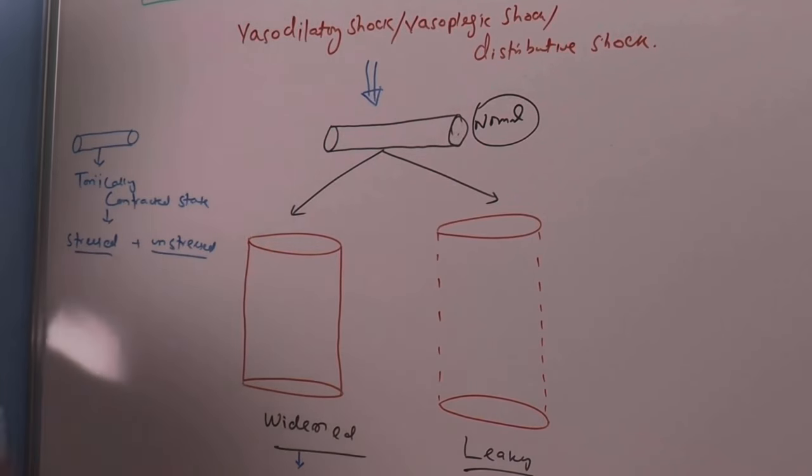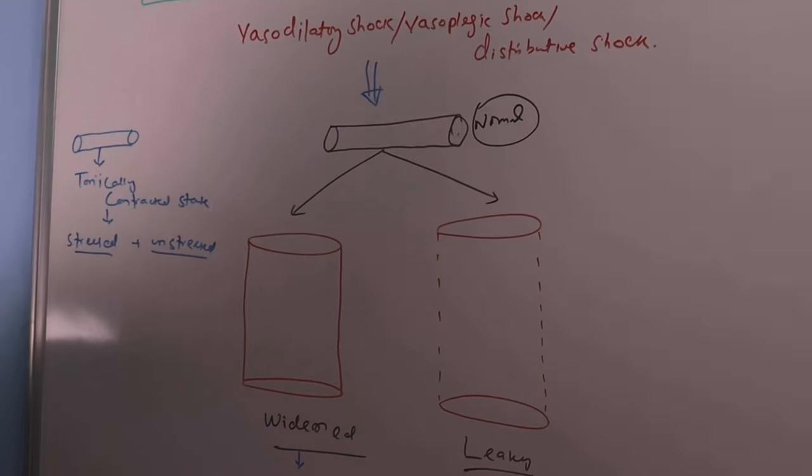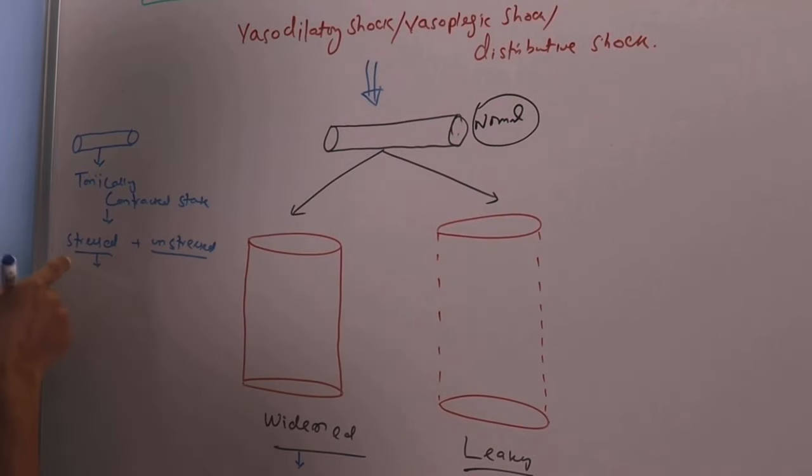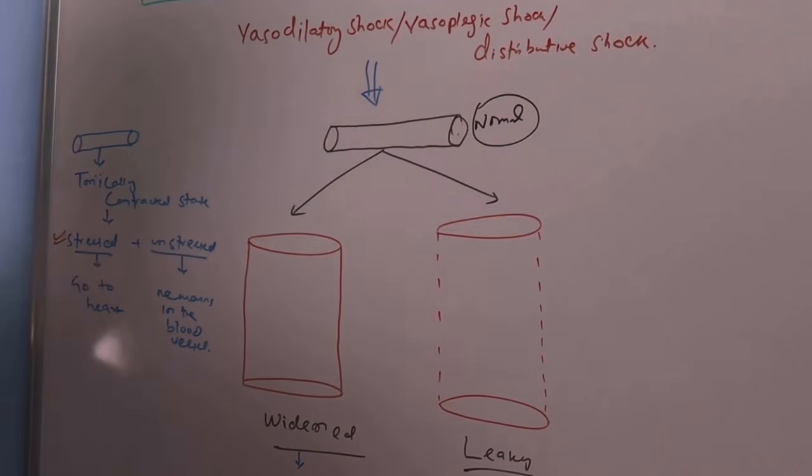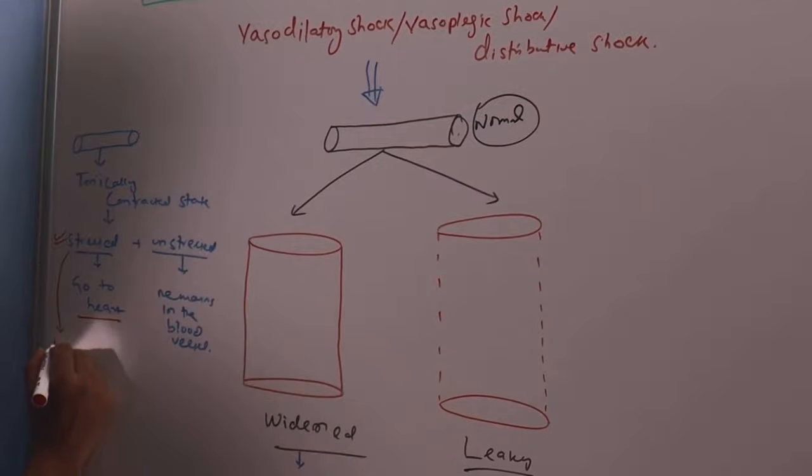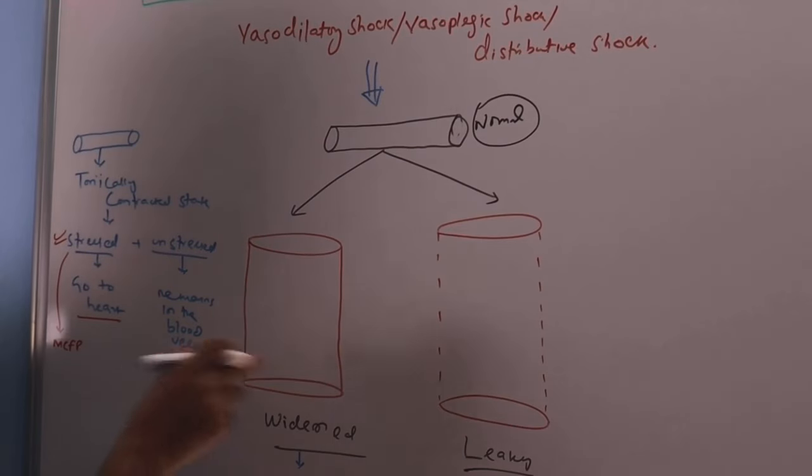Stressed volume means the volume that is under pressure. That means this is the volume that will go to heart. And this is the volume which remains in the blood vessel. So the more we have the stressed volume the more is the good for us. And the stress volume determines the mean capillary filling pressure. We discussed this mean capillary filling pressure minus the CVP. So that difference actually decides the cardiac output.